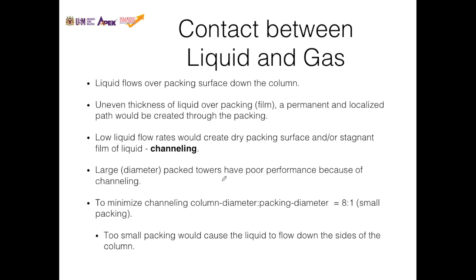A large diameter packed tower has poor performance because of channeling. So to minimize this channeling phenomenon, we would reduce the packing diameter, a ratio of column diameter to packing diameter of 8 to 1, or that is small packing. But if the packings are too small, it would cause the liquid to flow down the sides of the column, which would also decrease the performance of the absorption column.